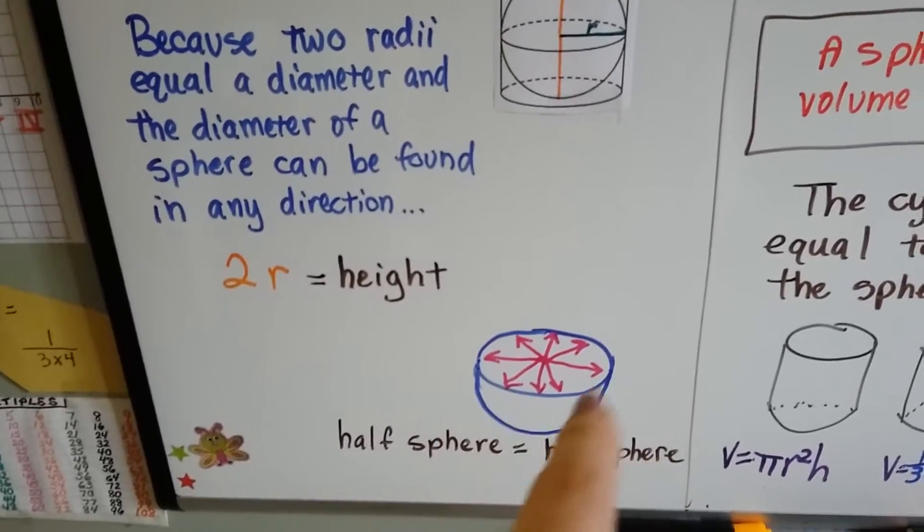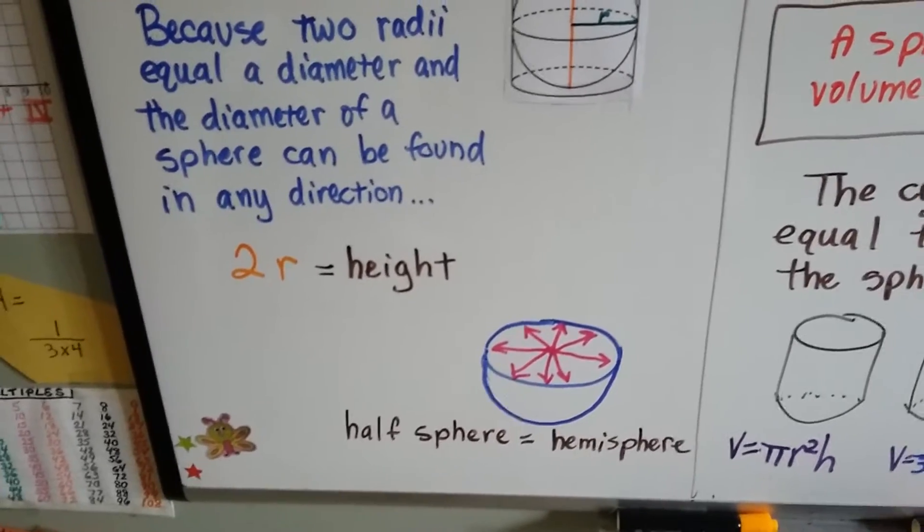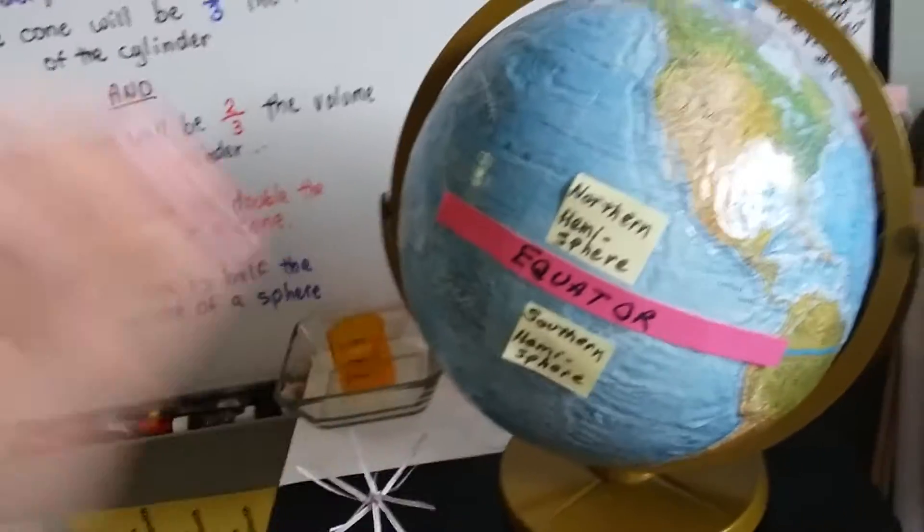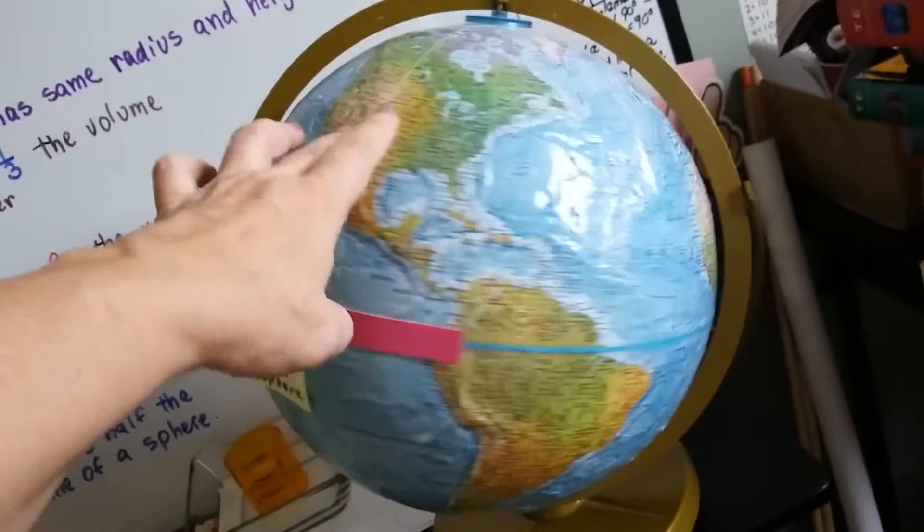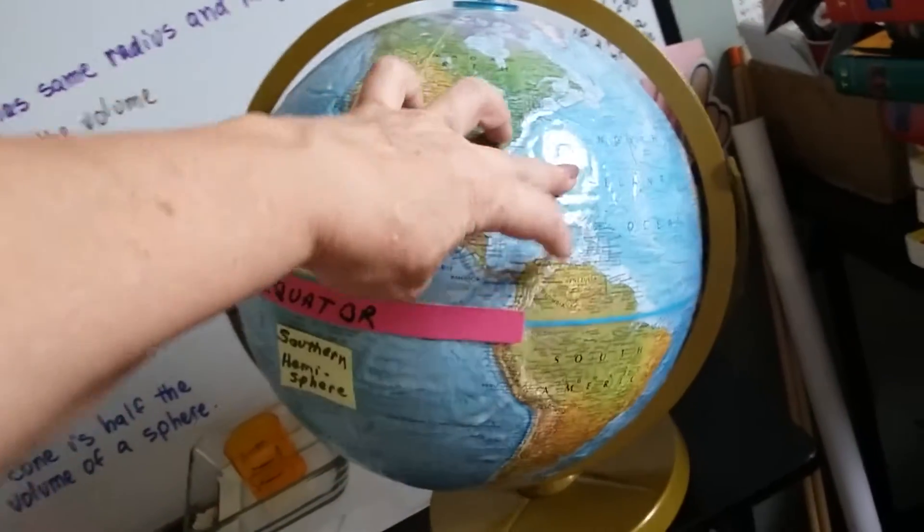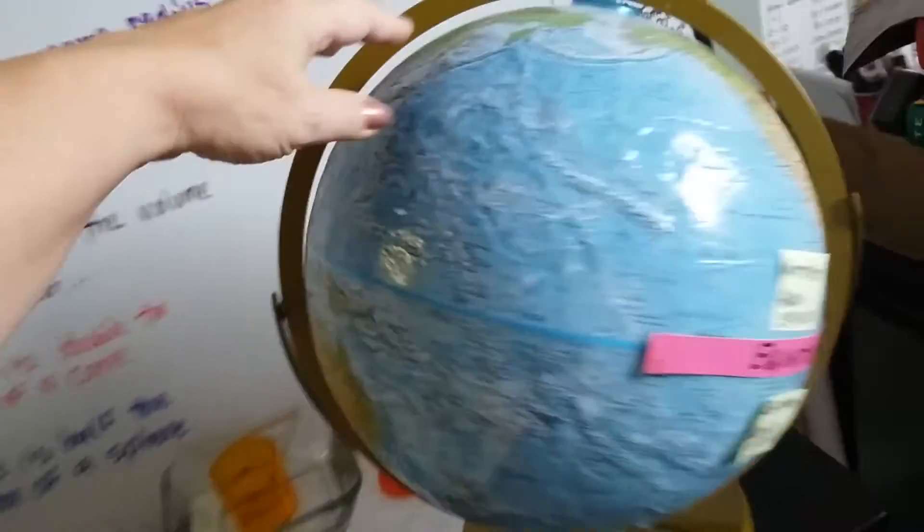If we cut it in half, half of a sphere is a hemisphere. And you know what that's like? That's like our Earth. So I've got this globe, and the equator cuts our Earth right down the middle. There's a blue line, and it runs all the way around the Earth. It goes through the top of South America.